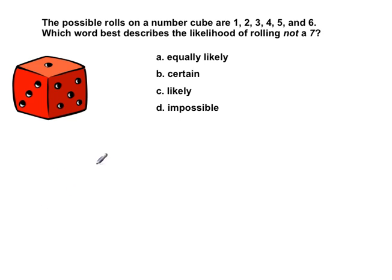The possible rolls of a number cube are 1, 2, 3, 4, 5, and 6. Which word best describes the likelihood, that means how often it could happen, of rolling not a 7? So on the cube, there's only 1, 2, 3, 4, 5, and 6. So rolling not a 7, are you ever going to be able to roll a 7? No. So rolling not a 7 will happen every time.